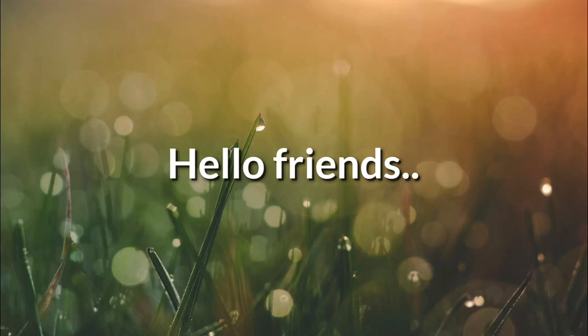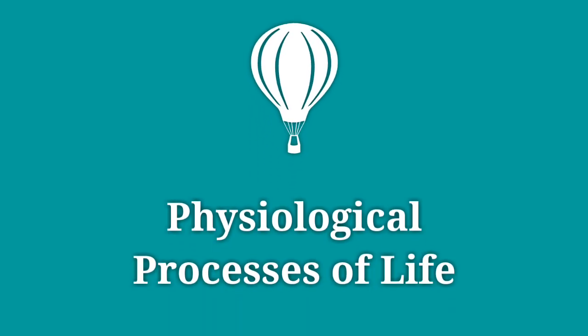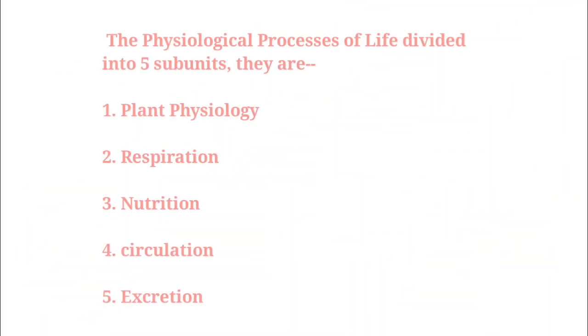Hello friends, today we will start a very interesting chapter named physiological process of life. The physiological process of life is divided into five sub-units: first, plant physiology; second, respiration; third, nutrition; fourth, circulation; and fifth, excretion.